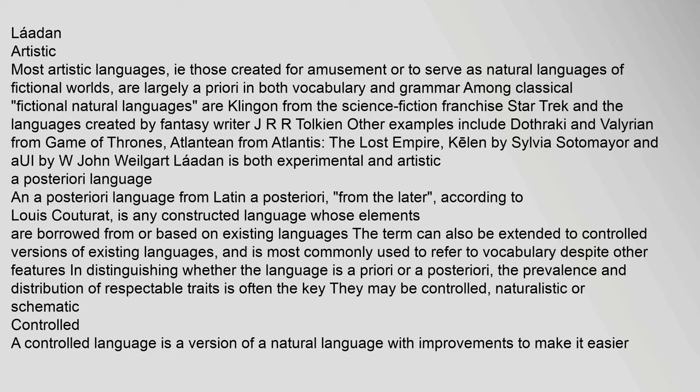Most artistic languages — those created for amusement or to serve as natural languages of fictional worlds — are largely a priori in both vocabulary and grammar. Classical examples include Klingon from Star Trek and the languages created by J.R.R. Tolkien. Other examples include Dothraki and Valyrian from Game of Thrones, Atlantean from Atlantis: The Lost Empire, and others. An a posteriori language is one whose elements are borrowed from or based on existing languages, and the term is most commonly used to refer to vocabulary.